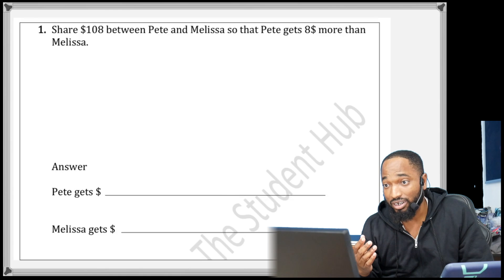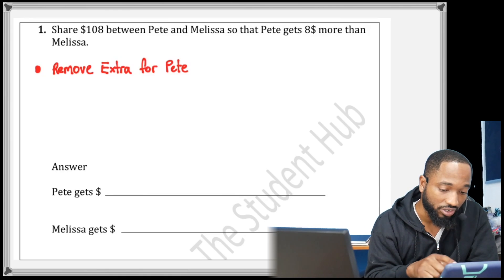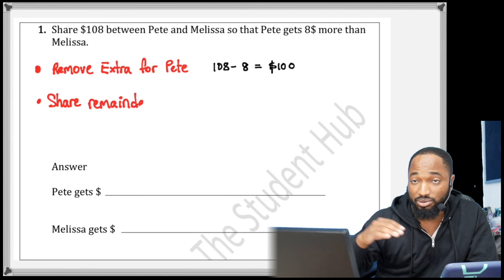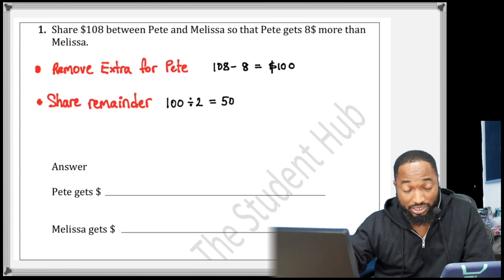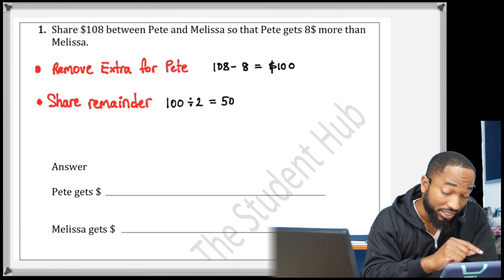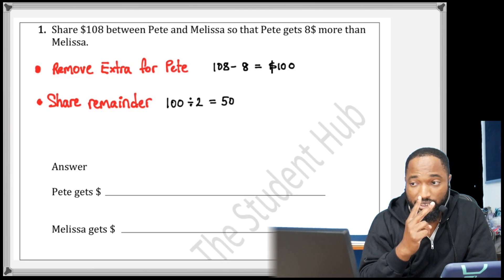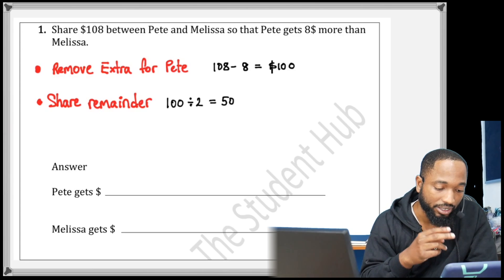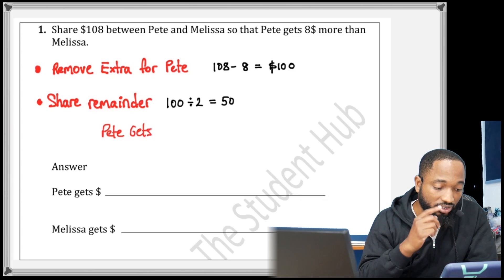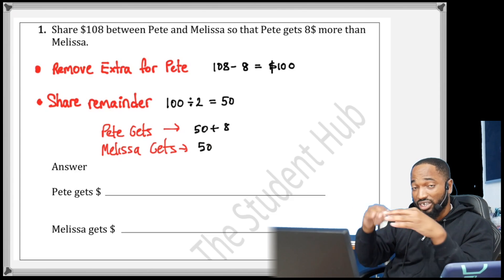Remove the extra for Pete. $108 take away $8, we get $100, which is the remaining sum of money. For this remainder we're gonna share it up. It's two participants, Pete and Melissa, so $100 divided by 2 is $50.